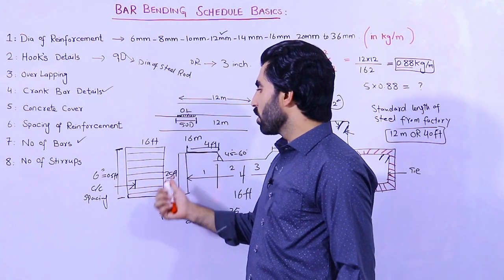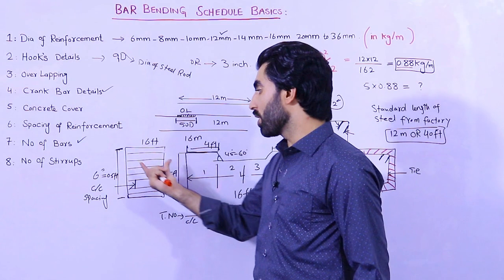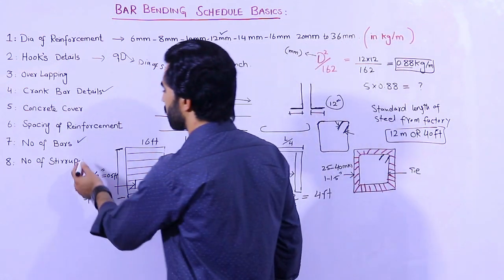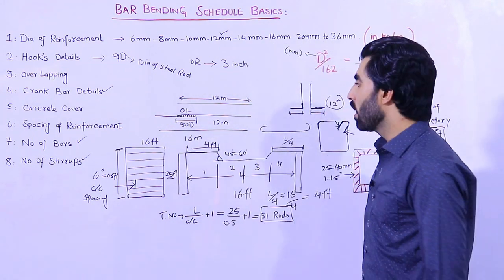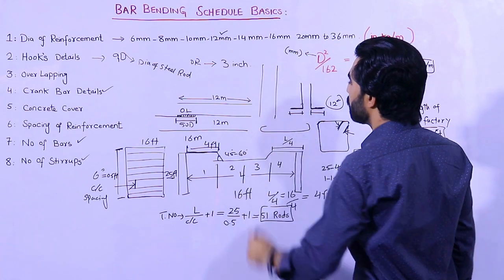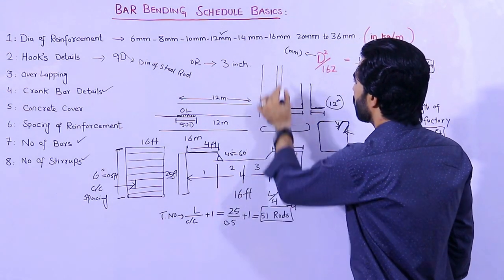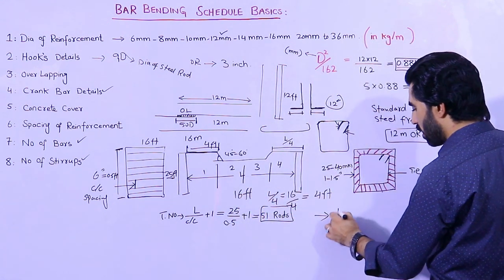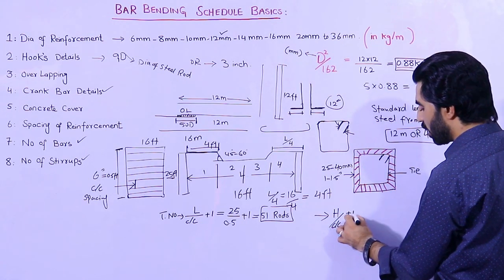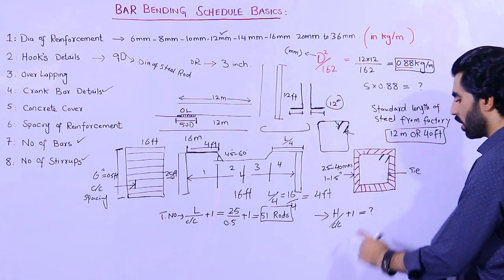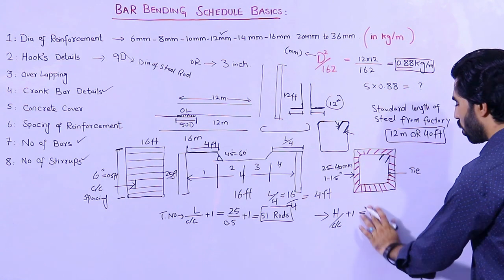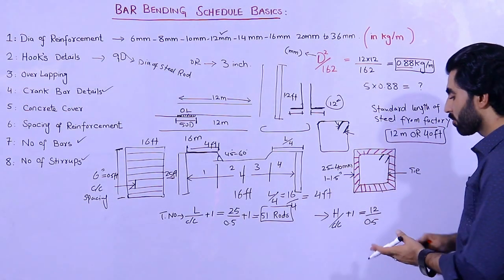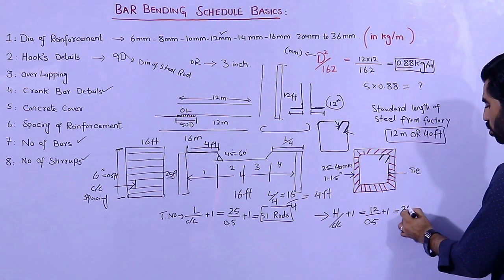You can use the same formula to find numbers of steel rods for the other direction: 16 divided by spacing plus 1. For numbers of stirrups — suppose I have a column with height of 12 feet and stirrup spacing of 6 inches (0.5 feet). Using the formula: Height divided by spacing plus 1 — 12 divided by 0.5, plus 1 — gives 25 stirrups required.